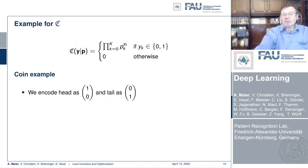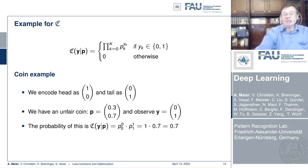Let's look at an example for a categorical distribution. The example that we want to take here is a Bernoulli trial, a coin flip. We encode head as (1,0) and tail as (0,1). Then we have an unfair coin, and this unfair coin prefers tails and has the probability of 0.7 for tails and 0.3 for head. Then we observe the true label (0,1), so it means we observe tails.